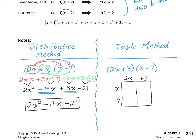Now we're going to multiply into the box. x multiplied by 2x is 2x squared. Then x multiplied by 3 is 3x. Then we're going to multiply in 2x times negative 7 — if you think about Punnett squares from science class, this is very similar. So that's negative 14x. And the last box: negative 7 multiplied by positive 3 is negative 21.